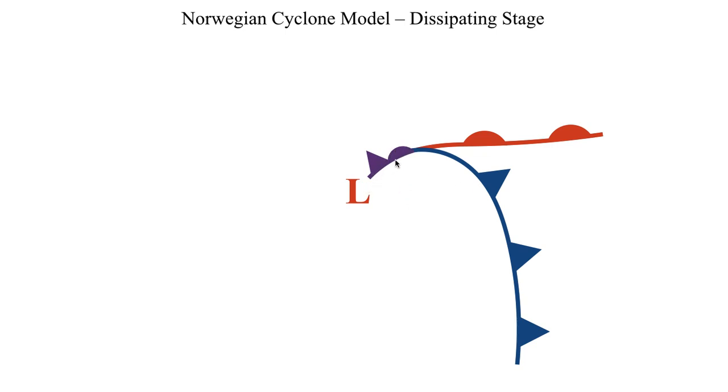You get what's referred to as an occluded front, colored in purple here. That's going to do it for this first segment discussing the evolution and typical life cycle of a cyclone and why they form. In the next several segments, we're going to be discussing the horizontal and vertical anatomy of the cyclone. So with that, I will see you all in the next segment.